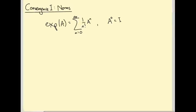We've now come across the exponential of a matrix, which we define to be the sum from n equals 0 to infinity of 1 over n factorial times A to the n, where A to the 0 means the identity matrix. I promised I'd tell you why this sum converges, but before that I need to tell you what it means for a sum like this to converge, or more generally, for a sequence of matrices to converge.